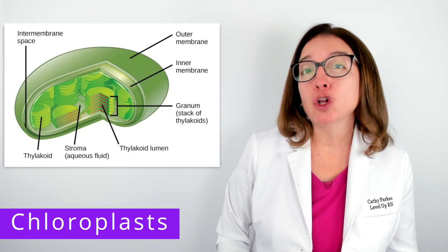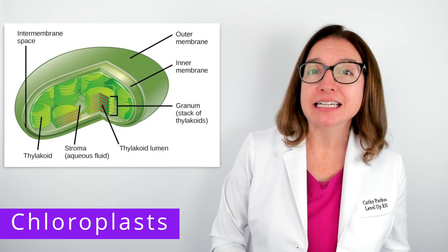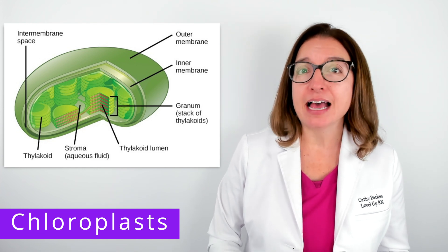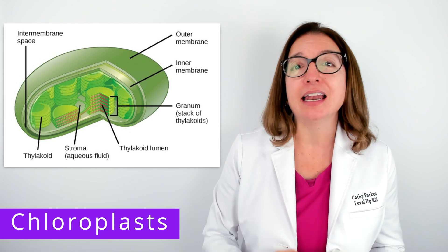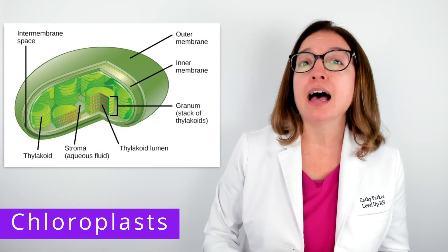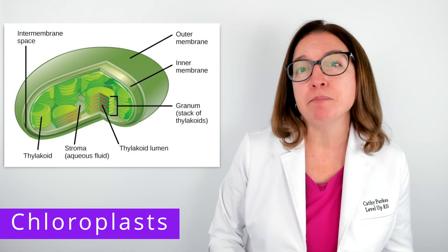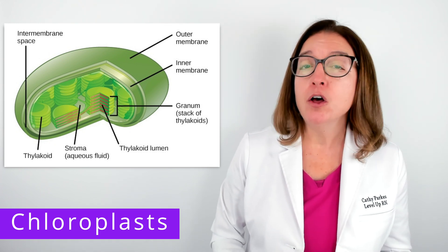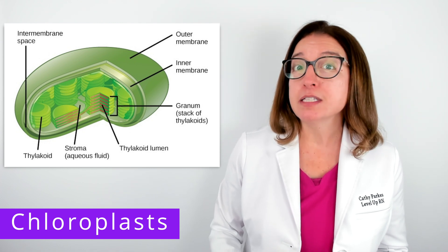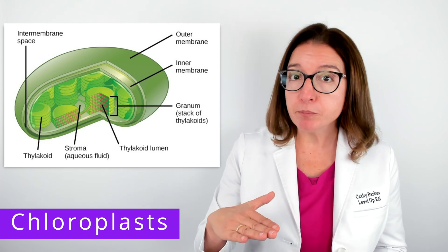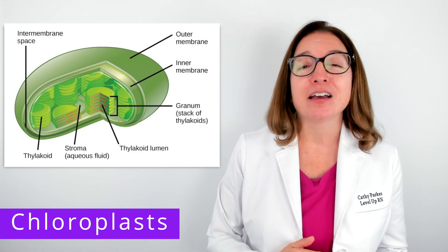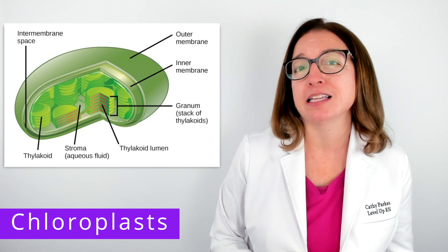Now let's talk about chloroplasts, which are organelles found in plant and algae cells where photosynthesis occurs. Each chloroplast has an outer membrane, an inner membrane, and a thylakoid membrane system. Inside the inner membrane, we have stroma, which is a gel-like matrix, and contained within that stroma, we have DNA, ribosomes, and metabolic enzymes. Photosynthesis occurs along the thylakoid membrane and in the stroma. We have a separate video that goes into the important details about photosynthesis.